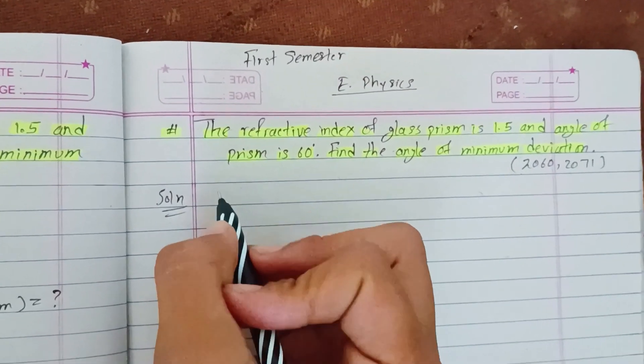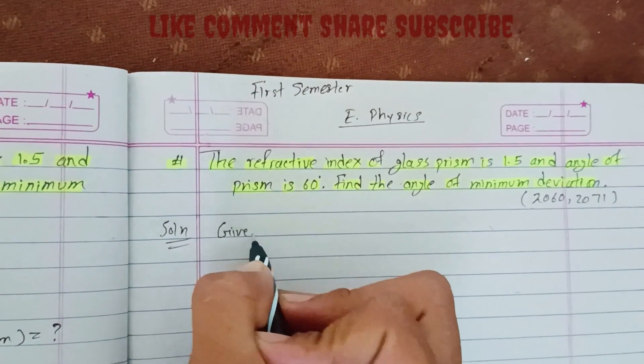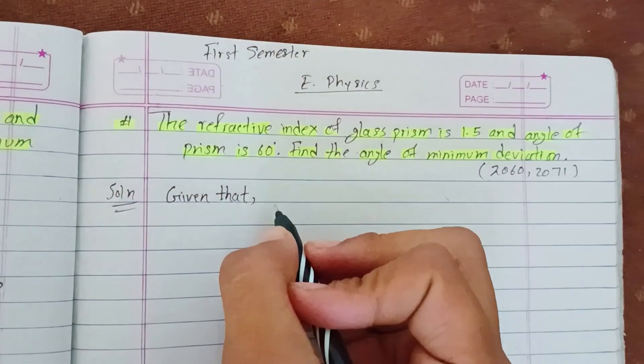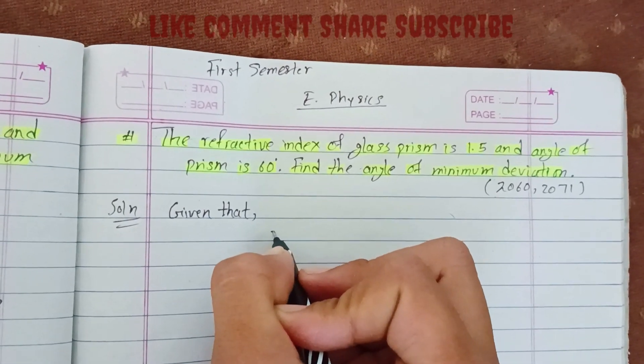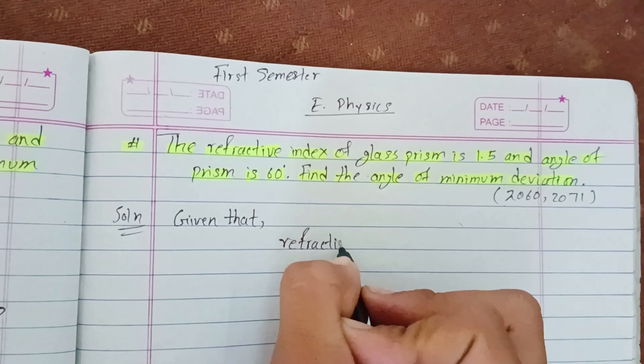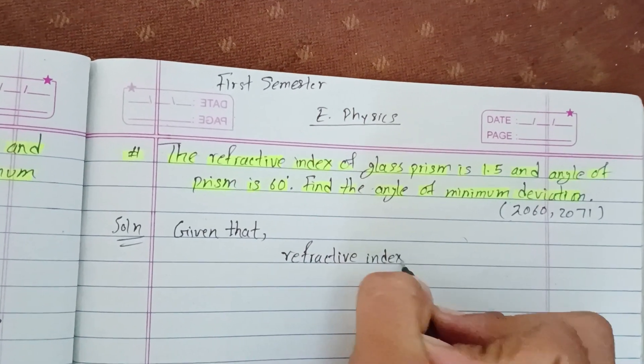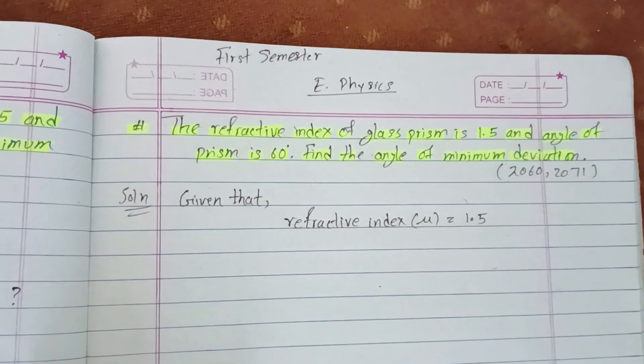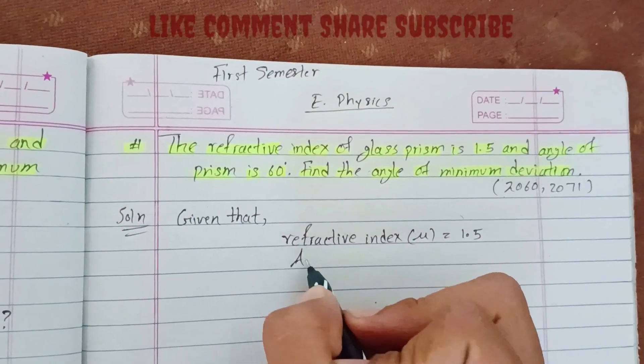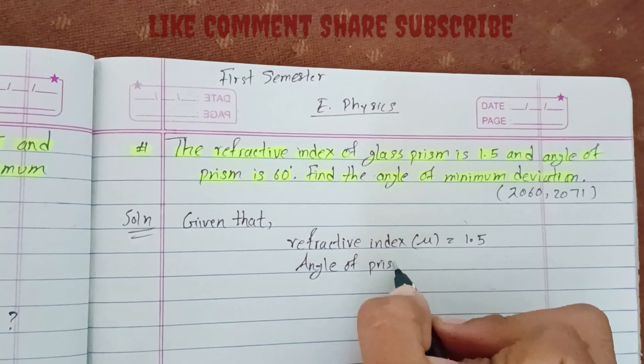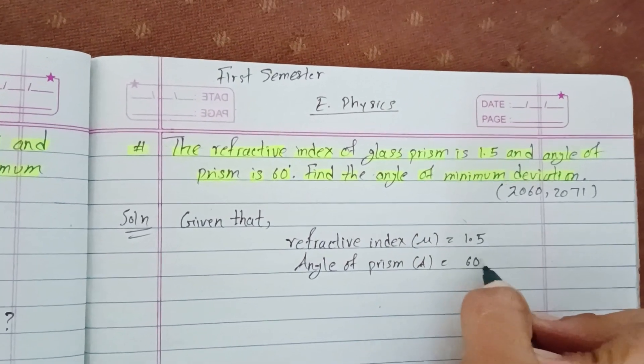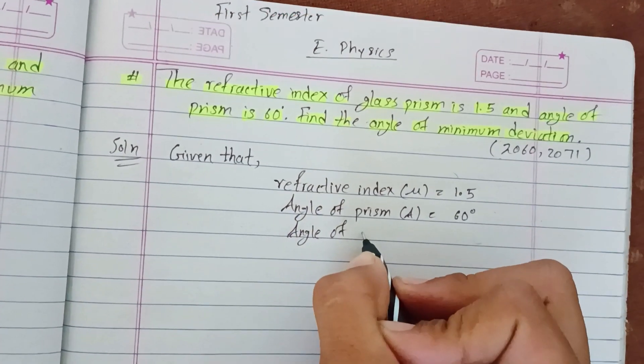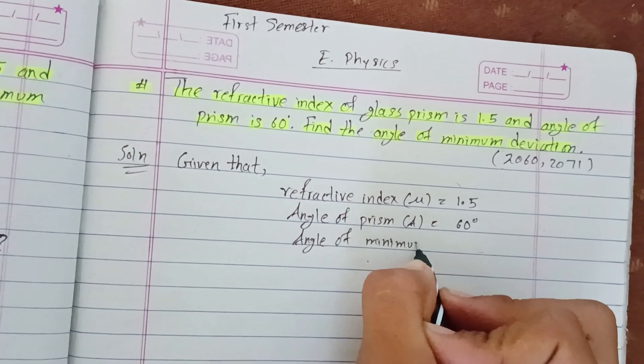Solution: Given that refractive index of glass prism μ = 1.5, angle of prism A = 60 degrees. We need to find angle of minimum deviation δm.